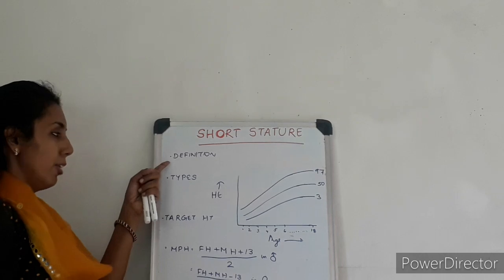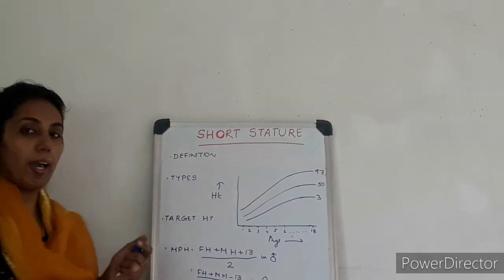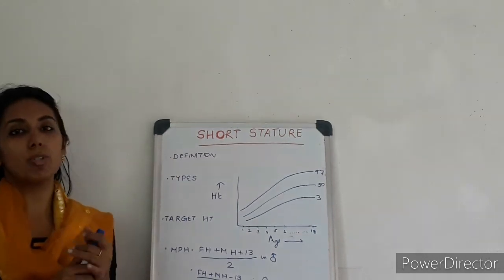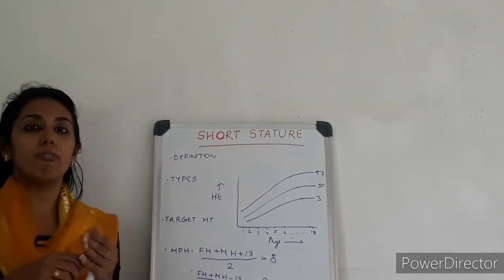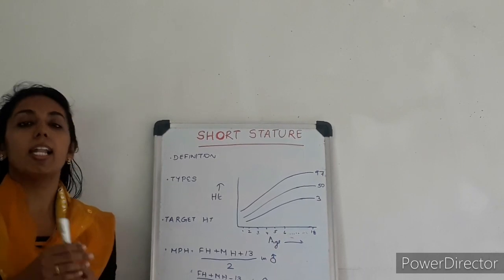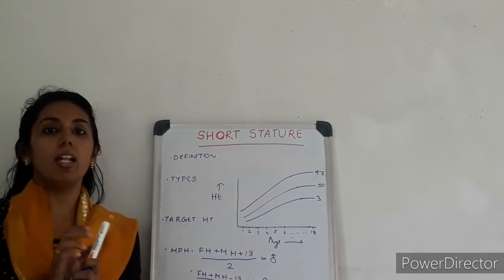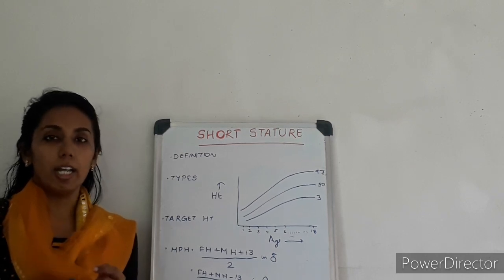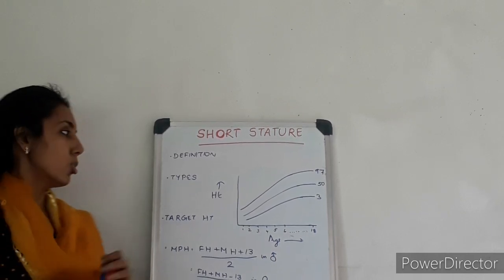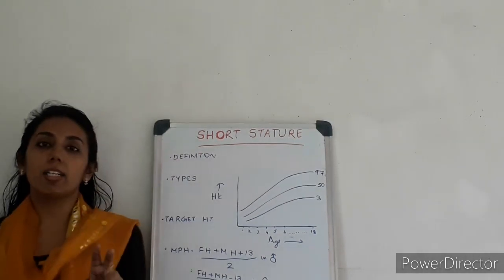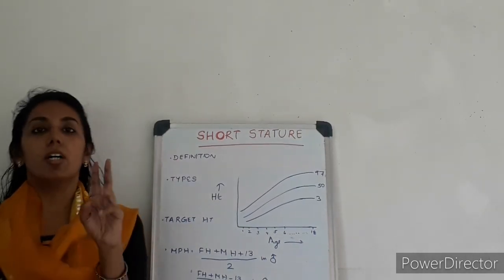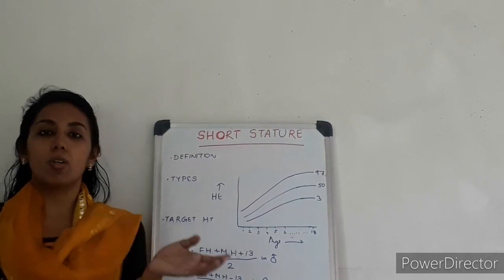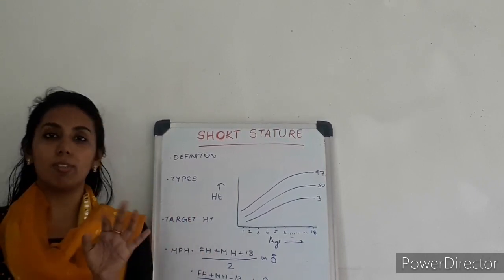So first thing is we have to know the definition, then types, the height and so many things. Please pay attention. What is meant by short stature? Short stature is defined as height of a child less than the third percentile or less than minus 2 standard deviation according to the age and sex of the child.